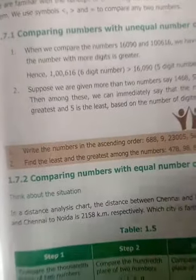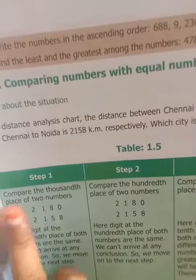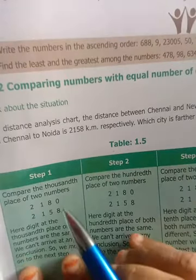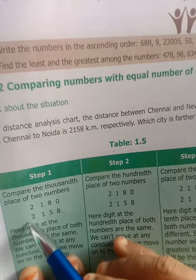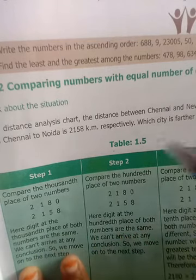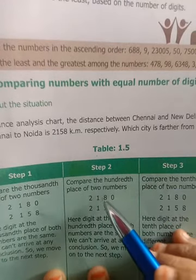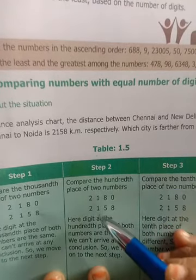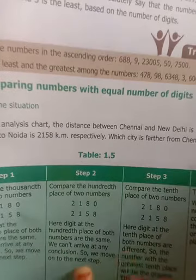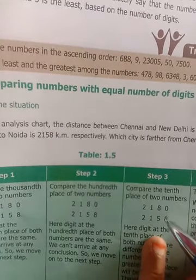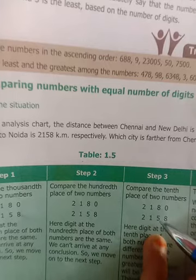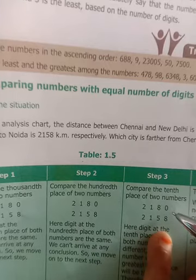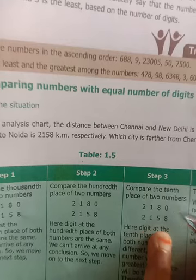First we have to compare the thousands place of the two numbers. In both the numbers the thousands place is the same. Then move to the hundreds place - here also both numbers have one in the hundreds place. So next move to the tens place. Here it is different. If here also it were the same, then we should go to the ones place.